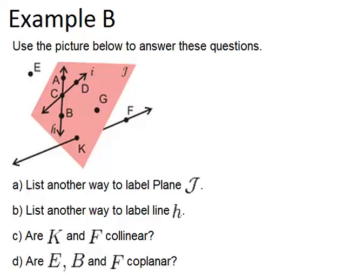Alright, so the first part says list another way to label plane J. So besides using one letter that sort of clearly states what the plane is that we're talking about,